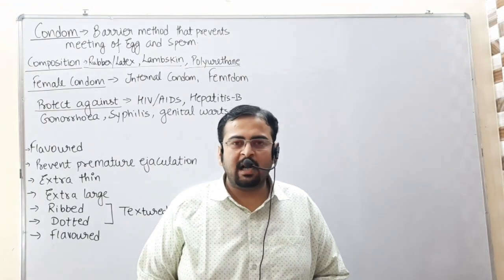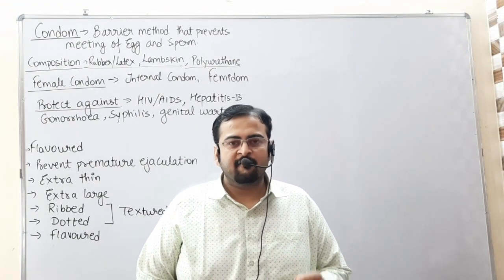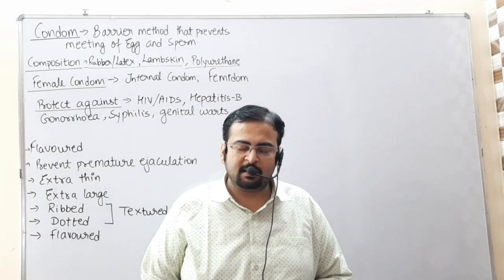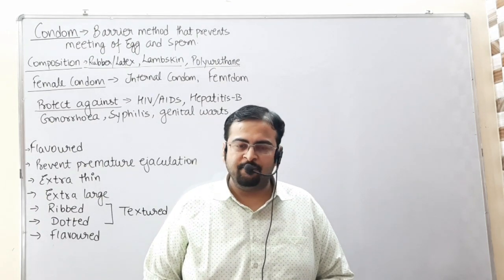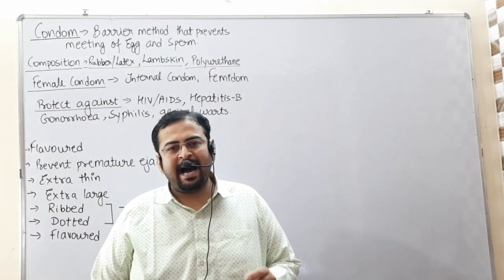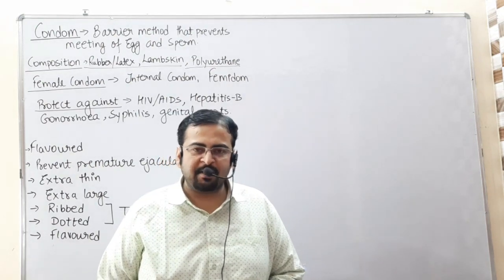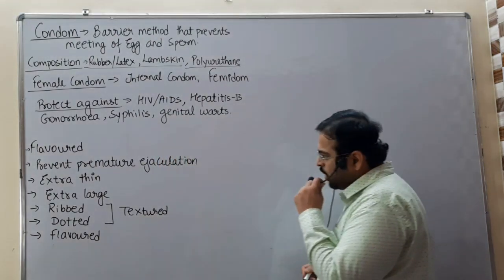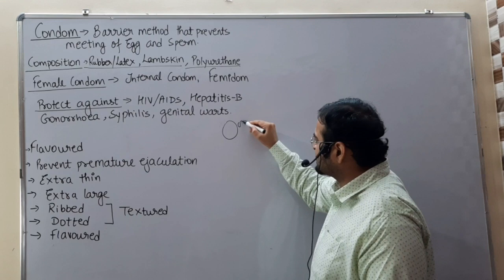Hello everyone, today we are going to discuss the first type of barrier method, that is condom. Condom is a barrier device which prevents the meeting of egg and sperm.